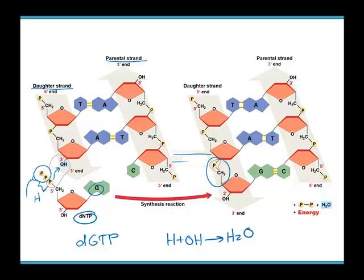By ripping off those two phosphate groups, we get energy. This is a self-powering reaction: the DNTPs are both the energy source and what ultimately becomes the molecule — very efficient. Those two phosphate groups float away and are reused to make more DNTPs. We then repeat the process by bringing in another DNTP and latching on to the 3' OH of the next nucleotide.